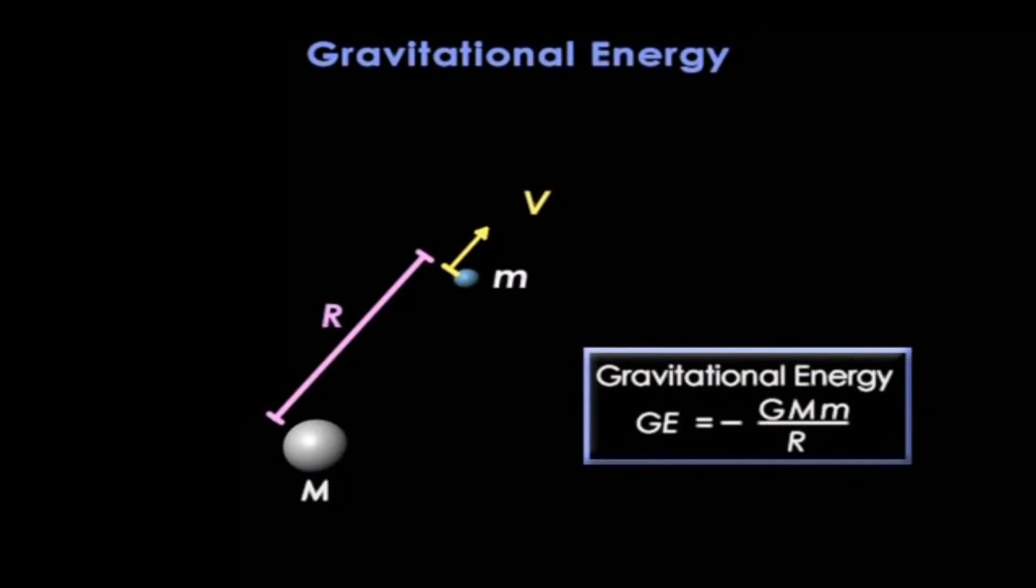It goes into the gravitational field that exists between the rock and all the other rocks. In math terms, the gravitational energy, GE, is -GMm/R, where big M is the mass of all the other rocks pulling back, and R is the distance of our rock to the center of the sphere. And of course, big G is Newton's gravitational constant.